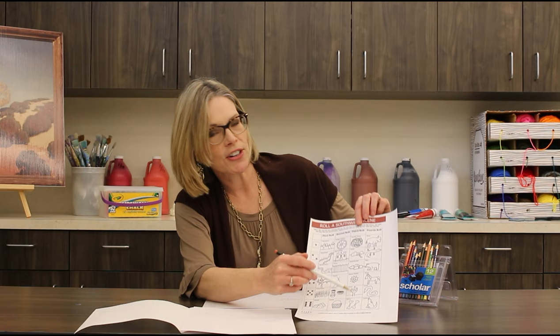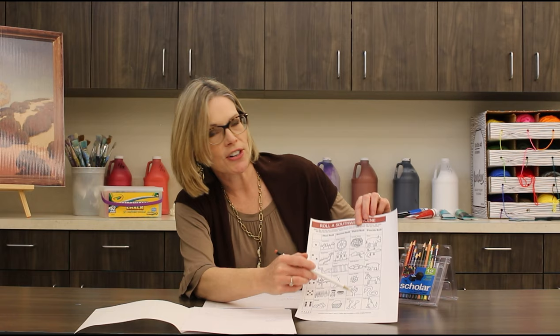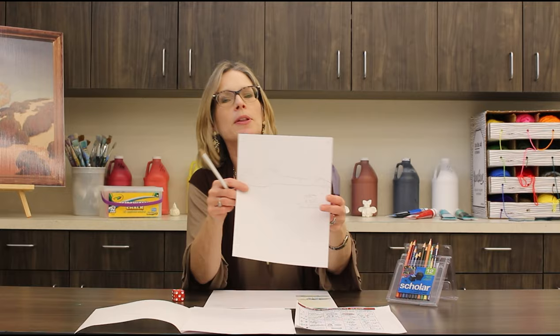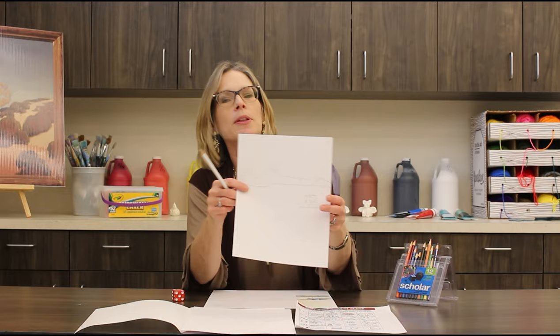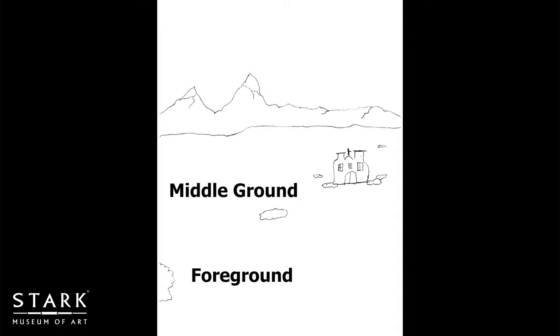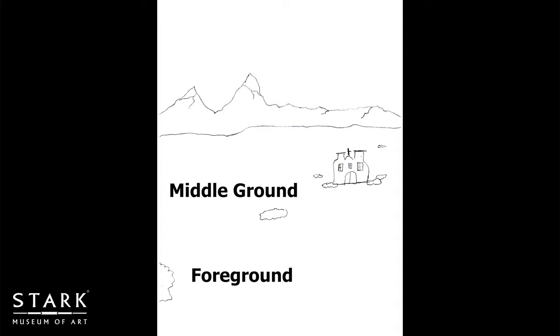Our next step — we're going to add something from the third column. I am rolling a three. Third column, three: small bushes. So I am going to add my small bushes. This is a perfect example of how you draw the same thing differently to show where it is in the landscape. The bush in the foreground is pretty close to the viewer and it is much, much larger than the bush in the middle ground. Look at the bushes around our old building — they are quite small. As you add your elements, think about where they are in your landscape.